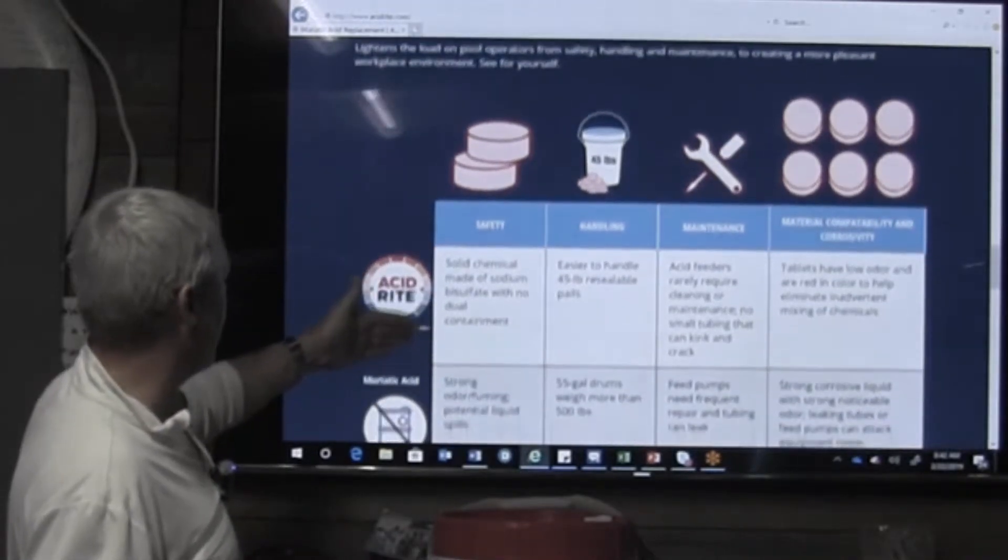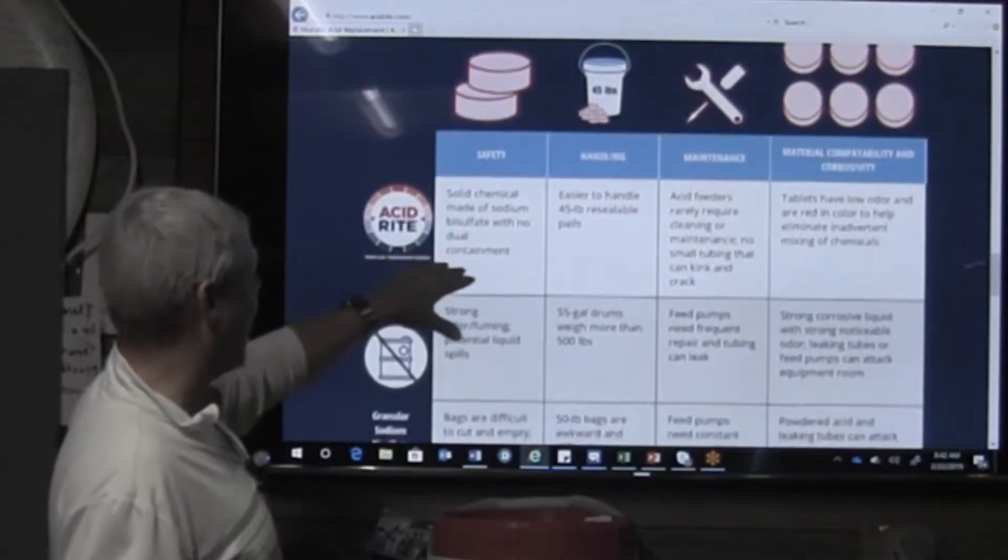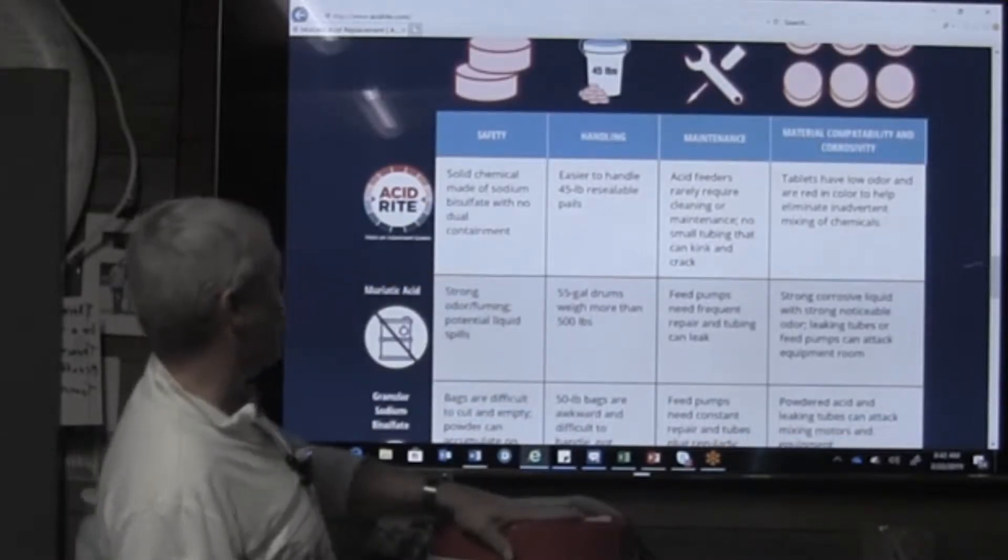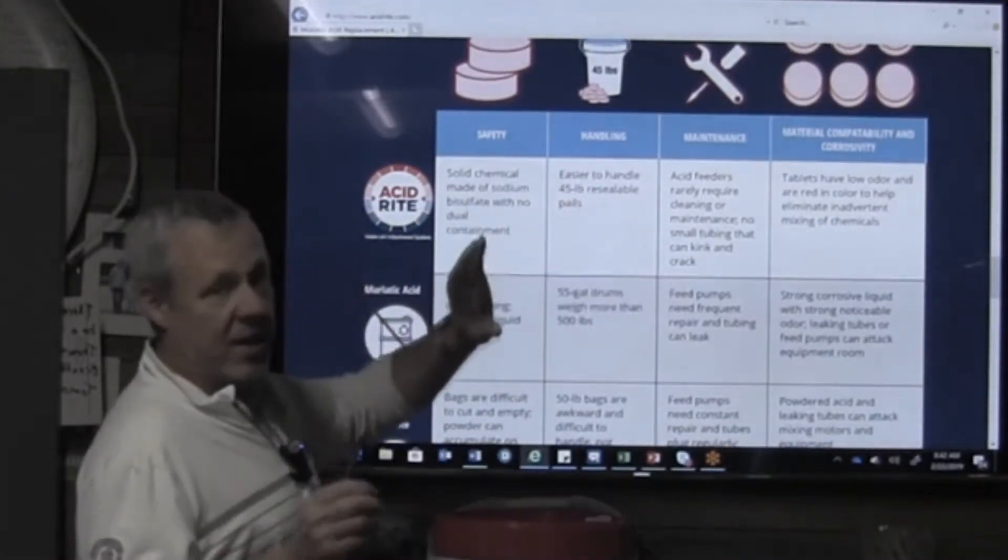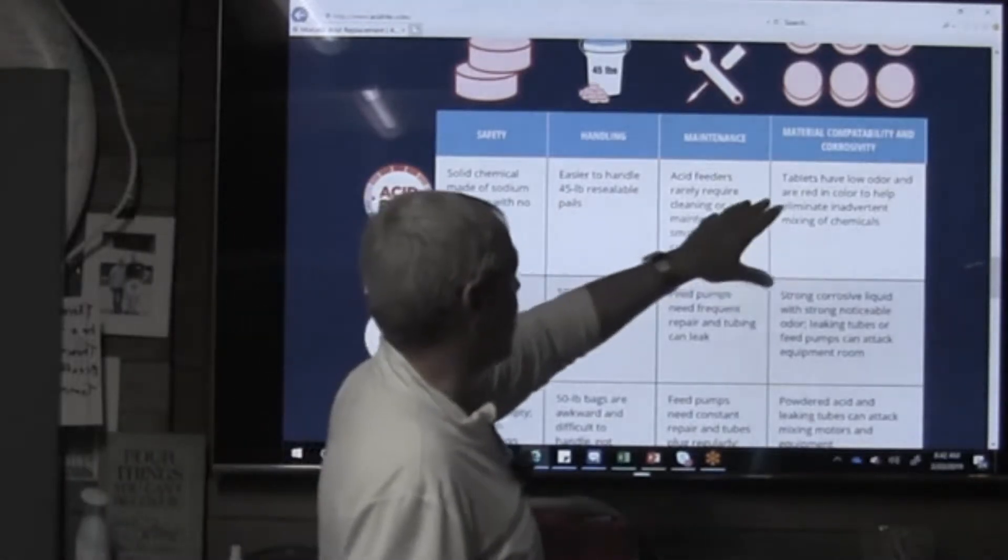So on the Acidrite, they talk quite a bit about it's a solid chemical, 45 pounds, easy to handle, the acid feeder rarely requires any cleaning and maintenance and the tablets are low odor.